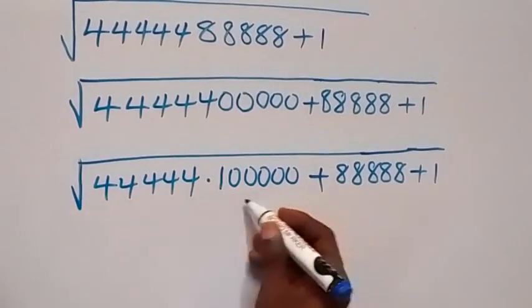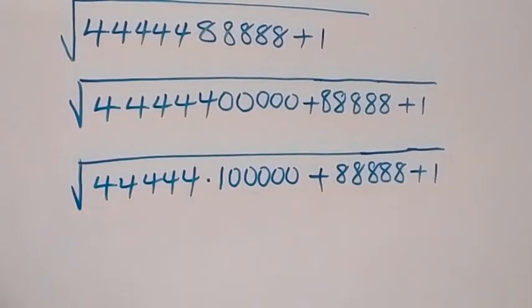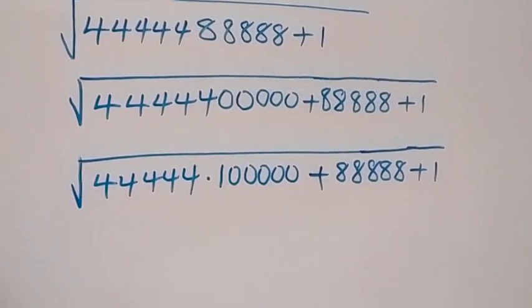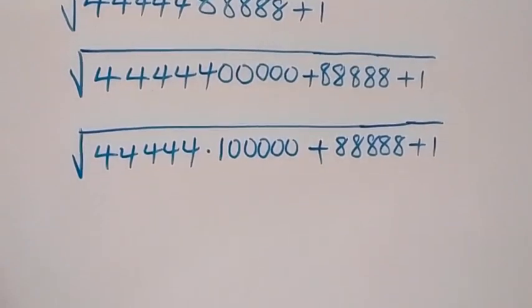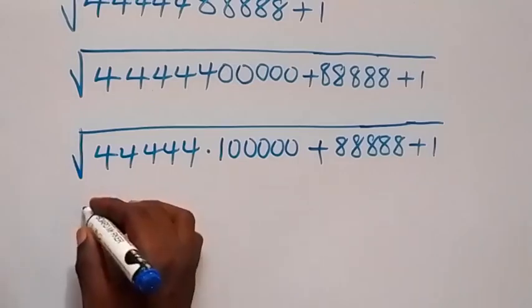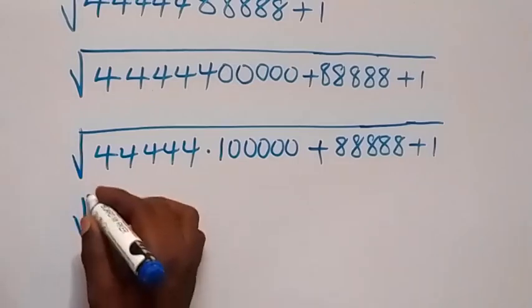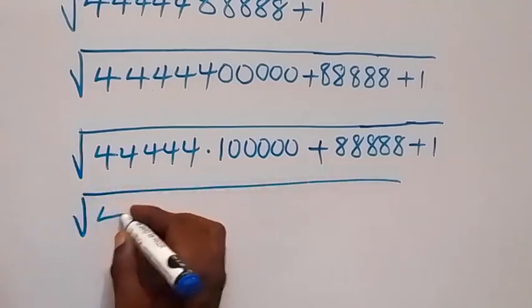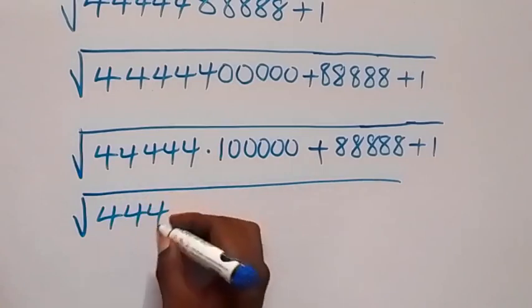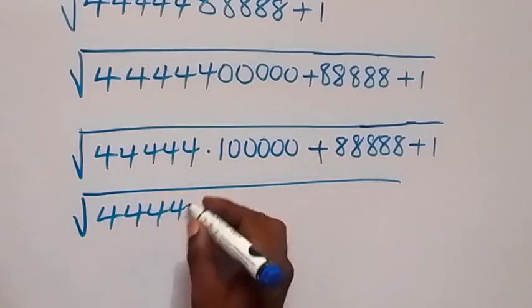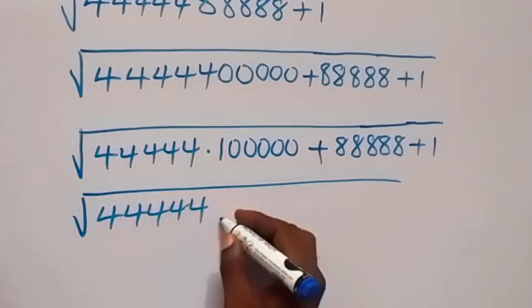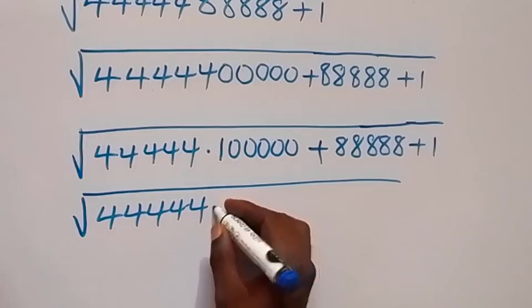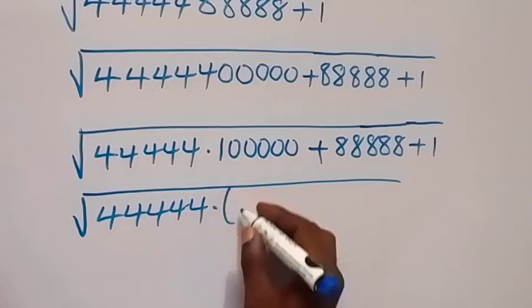From here in the next step we can also rewrite this, and we can write 99999 as 99999 plus 1. So this will now be square root of 444444 multiplied by...